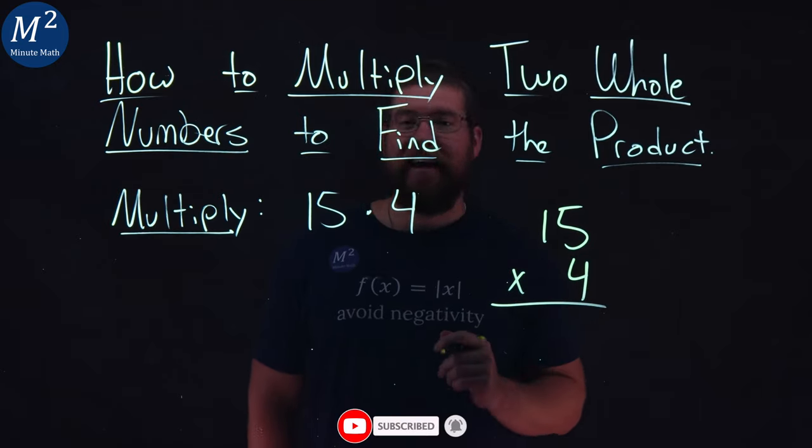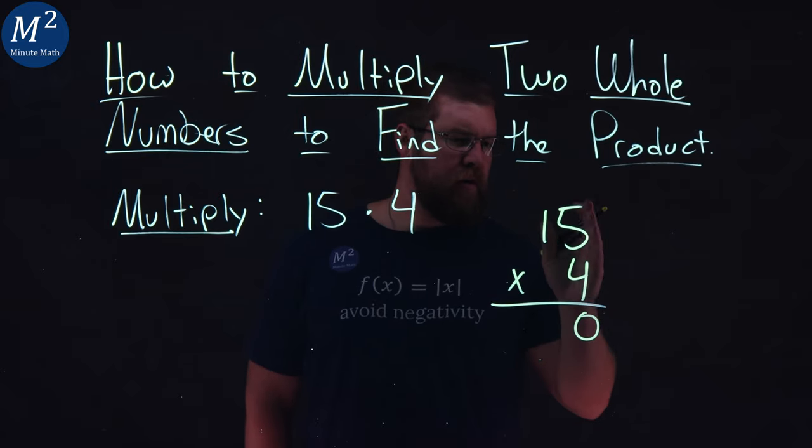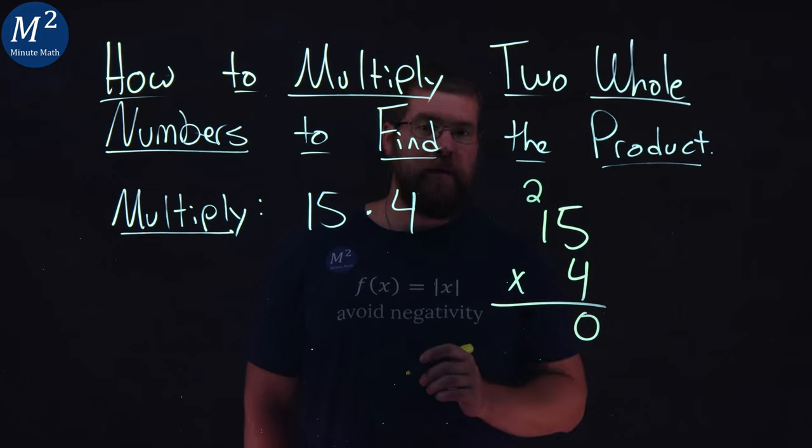I first start with 4 times 5, that is 20. Put a 0 here in the ones place and put a 2 up there for the 20.